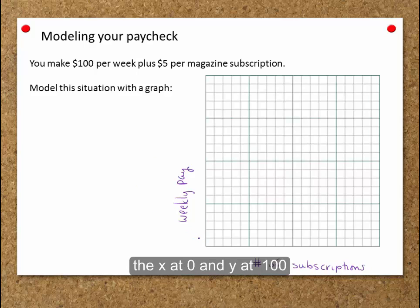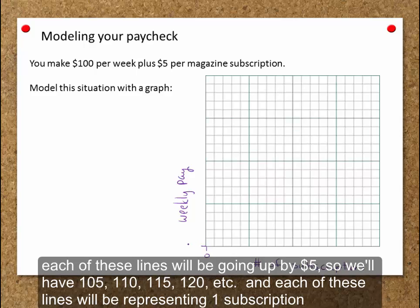We'll start with x at zero and y at $100. Each of these lines will be going up by $5, so we'll have $105, $110, $115, $120, etc. And each of these lines will be representing one subscription.